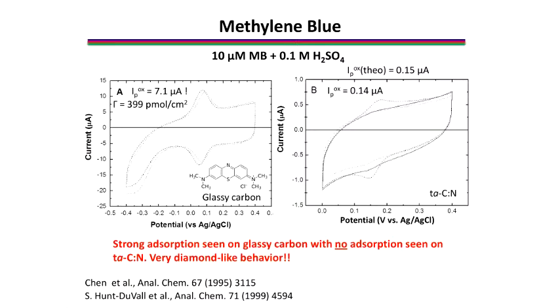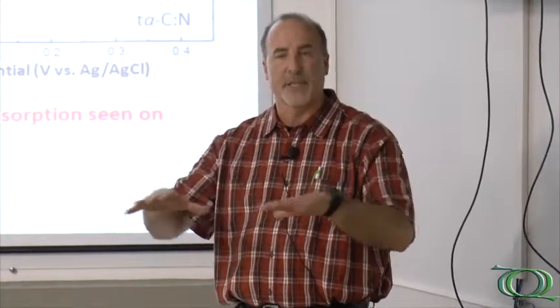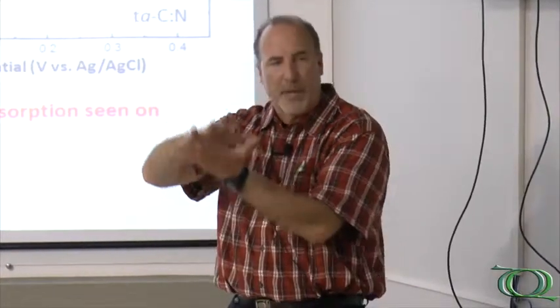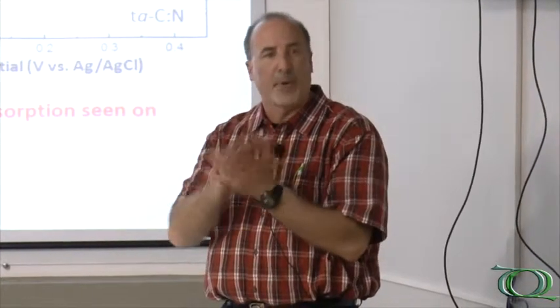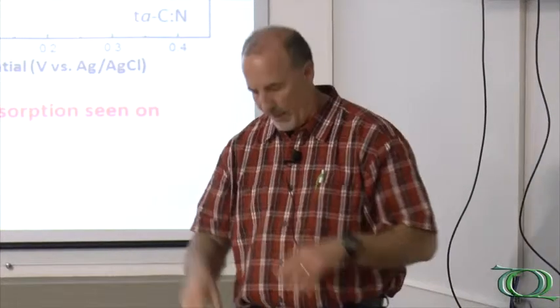One last thing: we can tell whether the material is behaving like a diamond electrode or a more graphitic electrode by adsorption studies. Most molecules have very weak adsorption on a diamond surface. The surface chemistry is important, but the bigger difference is there's no extended pi electron system on a diamond surface like there is on a graphitic surface. This extended pi system is very important for influencing pi-pi interactions and dipole-dipole interactions with the surface — we don't have that on diamond.